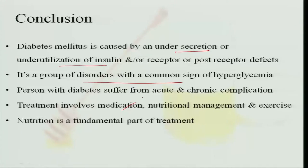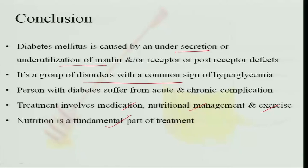Treatment involves medication, nutritional management, and exercise. There are five main points in the treatment of diabetes: diet, exercise, monitoring of diabetes, medication, and exercise. These are the five principal things to follow in the control of diabetes, and nutrition becomes the fundamental part of the control of diabetes.